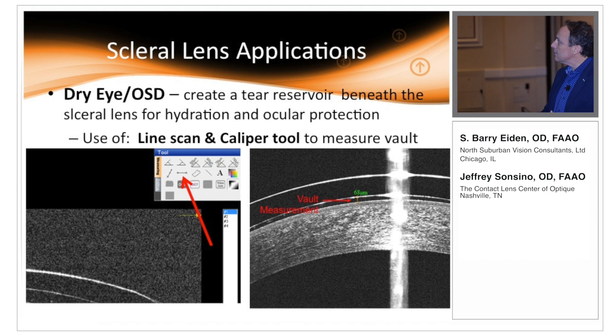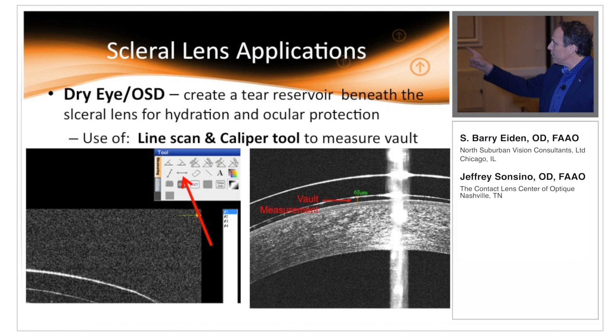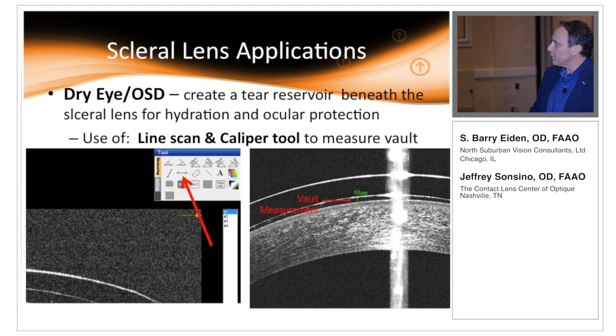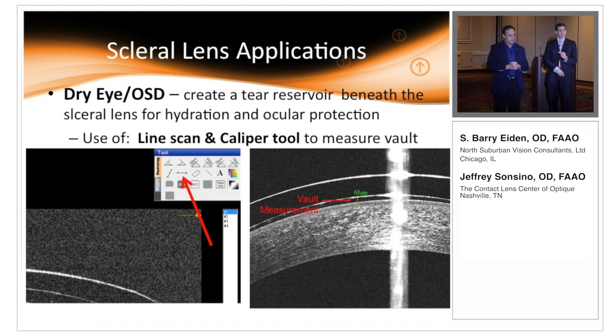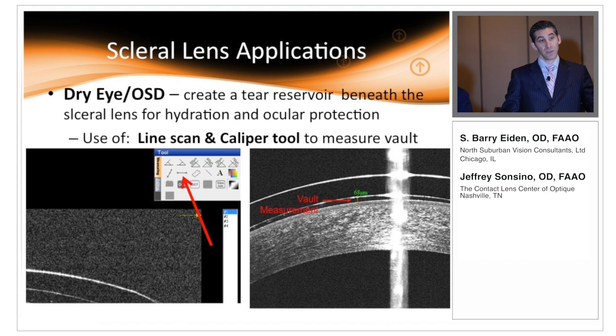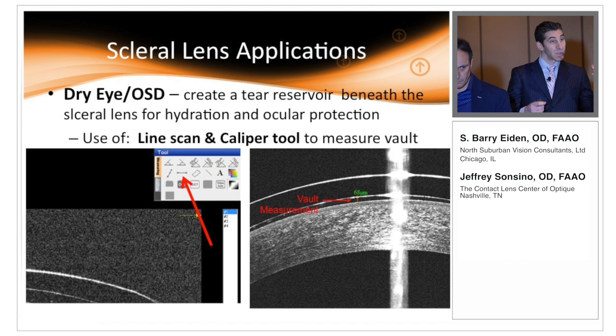Here you can see that classic measurement line tool used to measure exact vault in microns — in this example, 68 microns in that particular area. You can use it anywhere underneath the lens. We use our caliper tool not only for measuring vault but also to measure areas of bearing on the cornea. If a scleral or hybrid lens is bearing against the eye, I measure it so when I get a new lens I can verify whether I've cleared that area and confirm I'm adjusting parameters in the right direction.